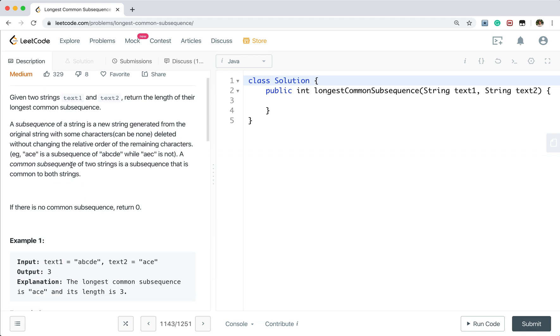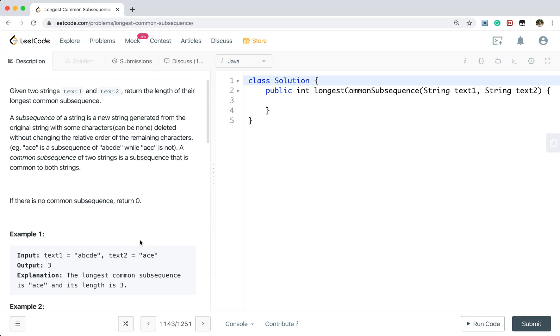So ACE is a subsequence of ABCDE while AEC is not because AEC has changed the relative order of the characters in ABCDE. A common subsequence of two strings is a subsequence that is common to both strings.